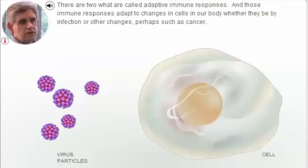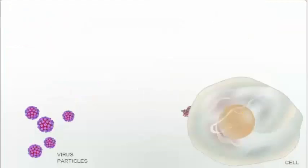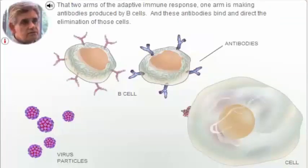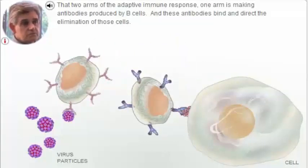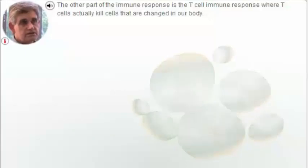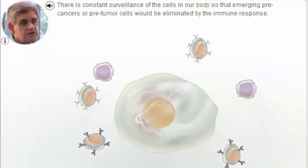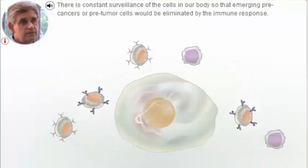There are two adaptive immune responses, and those immune responses adapt to changes in cells in our body, whether by infection or other changes such as cancer. One arm is making antibodies produced by B cells, and these antibodies bind and direct the elimination of those cells. The other part of the immune response is the T cell immune response, where T cells actually kill cells that are changed in our body. There is constant surveillance so that emerging pre-cancerous cells would be eliminated by the immune response.